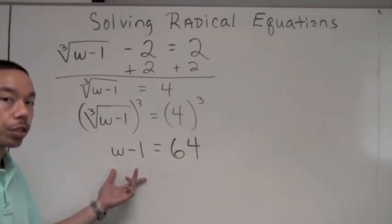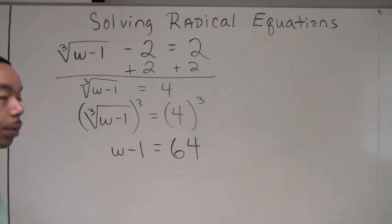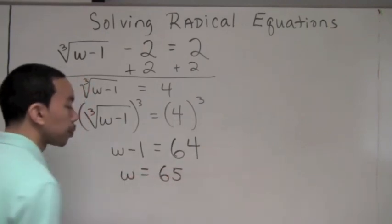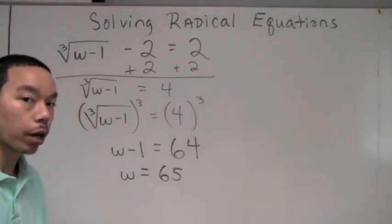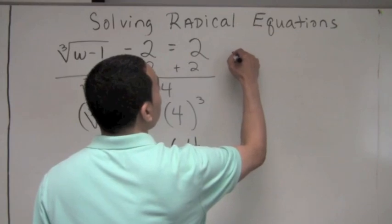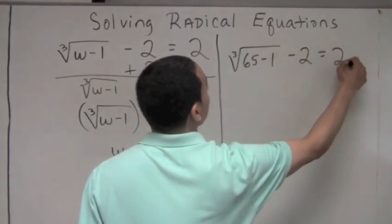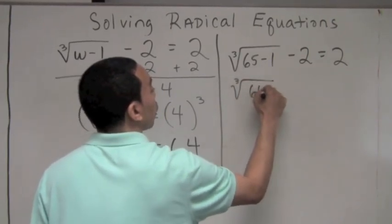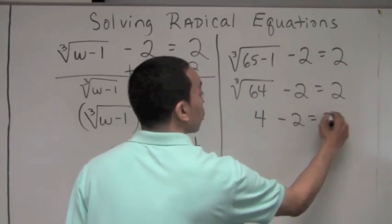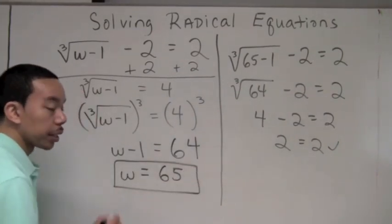Step three says to solve the resulting equation. We have no more radicals, so we solve directly: w minus 1 equals 64, so w equals 65. Step four: we must check all radical equations because there could be an extraneous solution. Substituting back: the cube root of (65 minus 1) minus 2 equals the cube root of 64 minus 2, which is 4 minus 2 equals 2. It checks out, so w equals 65 is our solution.